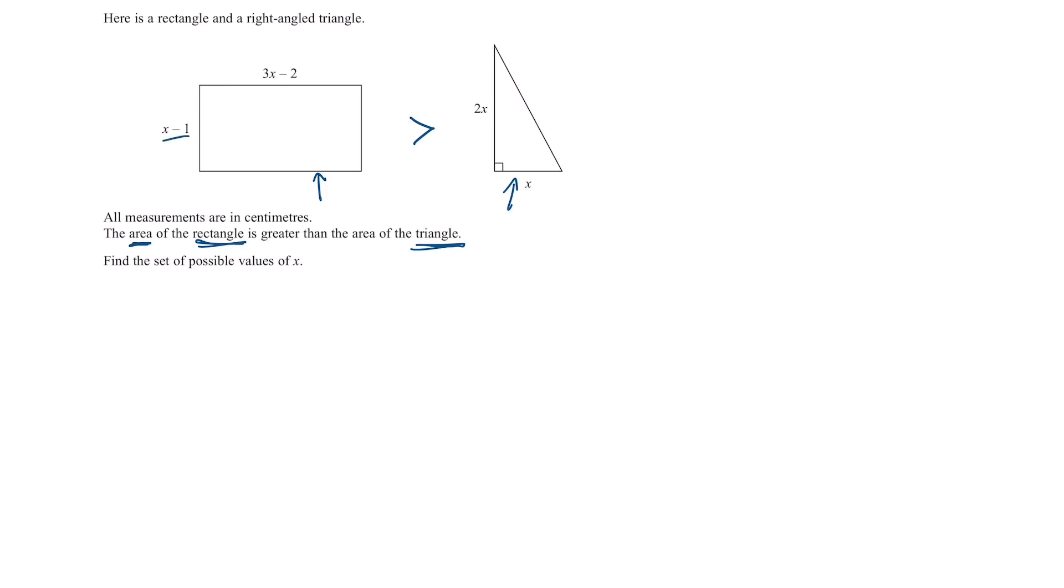We know how to find the area of a rectangle and how to find the area of a triangle. What is the area of a rectangle? The height multiplied by the width which is x minus 1 all in brackets multiplied by 3x minus 2. And this is area of rectangle. Now for the triangle we know that its area is given by half times base times height. Here's the base. Here's the height. So the area of the triangle is half times x times 2x. This is area of triangle.